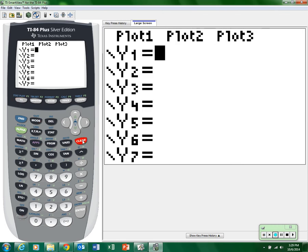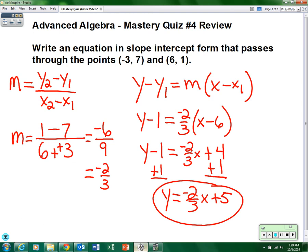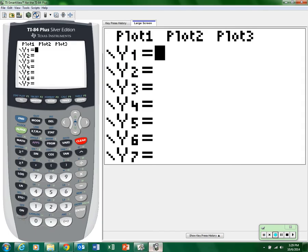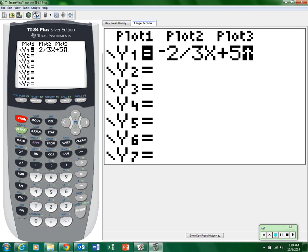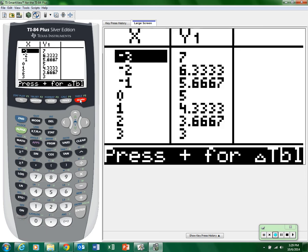And type in what we just found: the negative 2/3 x plus 5, in your y equals screen. Negative 2/3 x plus 5. Now go to your table. So go Second, then the Graph button, which is your table.